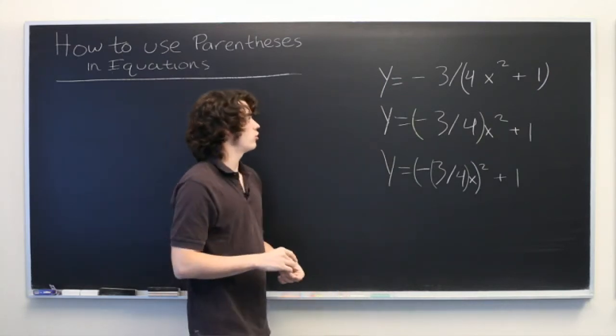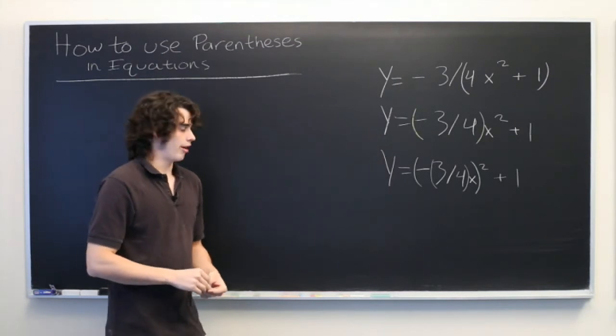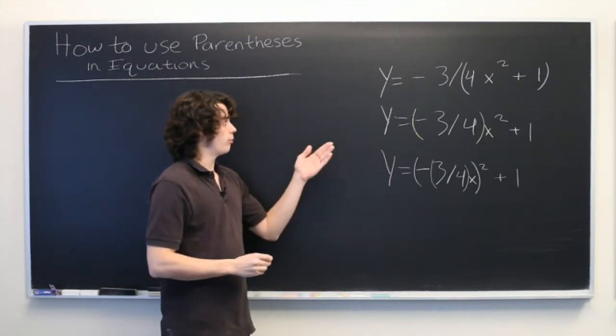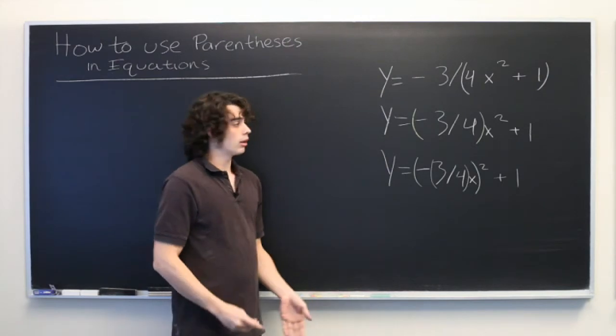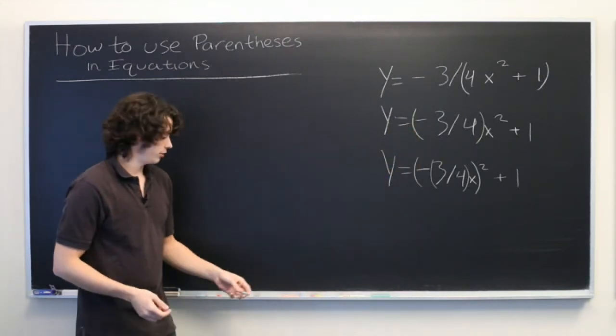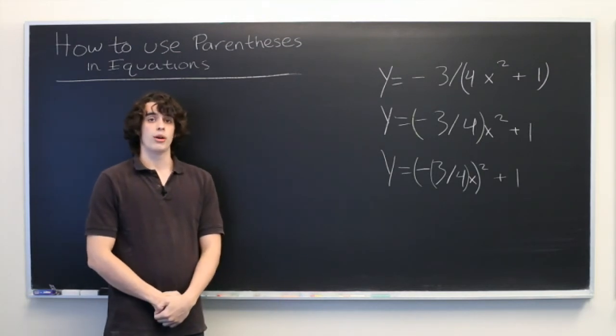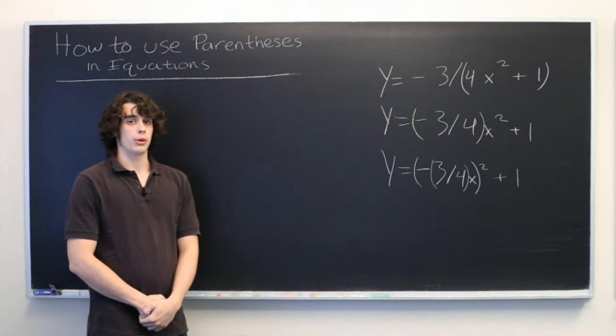So whenever you're given an equation whose meaning is not quite clear, go back to the original problem and ask yourself what relationship between y and x is being described. Then just insert parentheses to make it less ambiguous. That's all there is to it. My name is Ryan Malloy and we've just discussed how to use parentheses in equations.